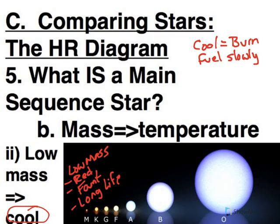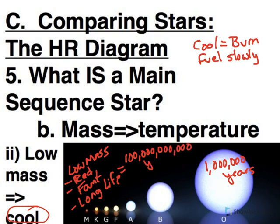What does a short life or a long life mean? O stars live for about a million years. M stars live for about a hundred billion years. Our universe has not existed long enough for an M star to die — very, very large extremes as far as lifetimes of stars. And all of it comes back to the mass: mass determines all of these characteristics of our main sequence stars.